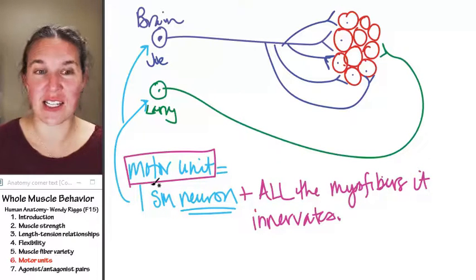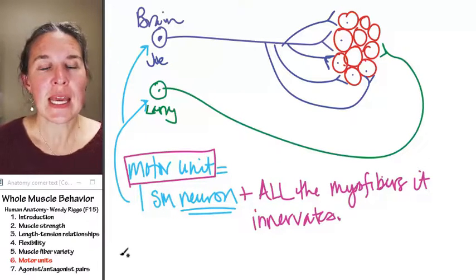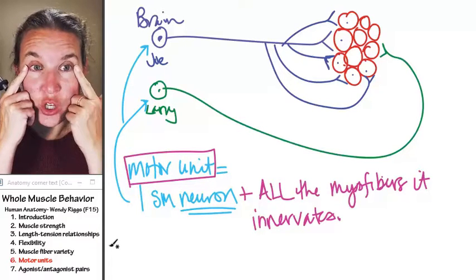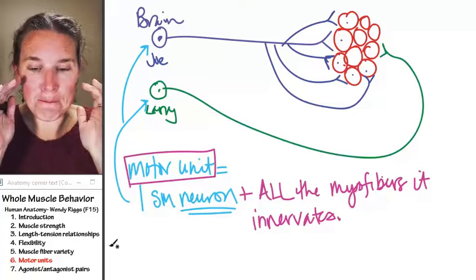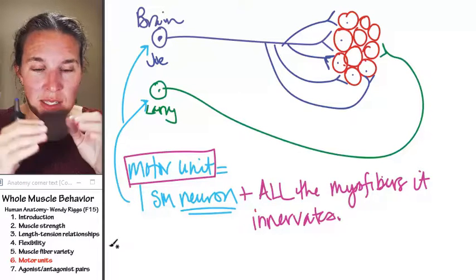Now, here's the interesting thing. Think about this for a second. In your eyes, you have motor units where you have one neuron that's controlling. One message from one neuron is controlling, like, 40 different muscle cells, and all of this stuff is tiny.